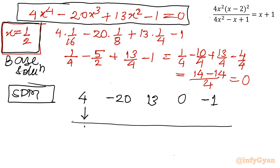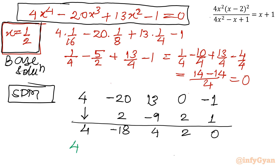Taking the leading coefficient 4, multiply by one half to get 2. Then minus 20 plus 2 equals minus 18; multiply by one half to get minus 9. Then 13 minus 9 equals 4; multiply by one half to get 2. Then 0 plus 2 equals 2; multiply by one half to get 1. Then minus 1 plus 1 equals 0. So the resulting cubic equation is 4x³ minus 18x² plus 4x plus 2 equals 0.